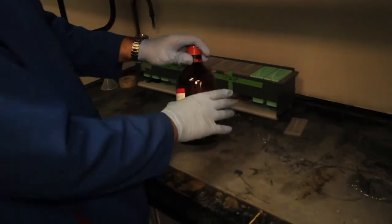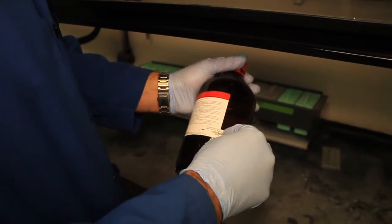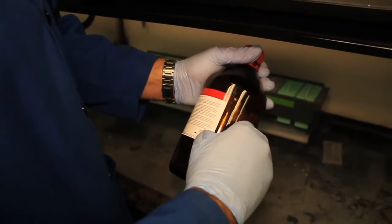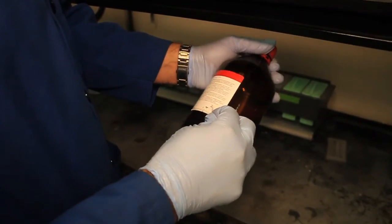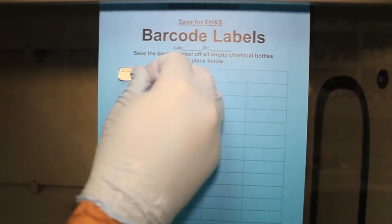To properly dispose of an empty chemical bottle which contained a liquid, first peel off the chemical barcode label that is attached to the bottle. Place it on one of the barcode label sheets provided.